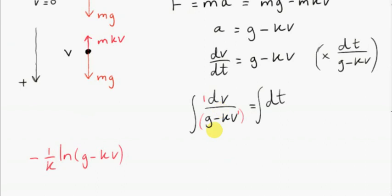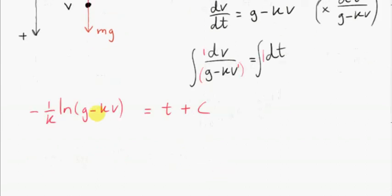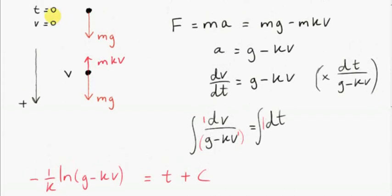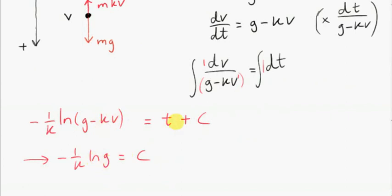The left-hand side integrates to minus 1 over k times ln of g minus kv. We bring the integration constant over and combine it with the constant on the right-hand side, giving t plus c. Before isolating v, we find c using the initial condition: when t equals 0, v equals 0. Substituting gives ln g equals c. So c equals minus 1 over k times ln g.